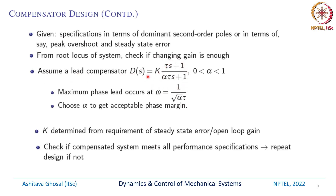In that case we can use a lead compensator. The lead compensator transfer function is k times (τs + 1) divided by (ατs + 1), where alpha is between 0 and 1. The maximum phase lead occurs when omega equals 1 over the square root of α·τ. We need to choose alpha to get the acceptable phase margin. K is determined from the requirement of steady state error or the open loop gain, and it needs to be checked if the compensated system meets all performance specifications. If it doesn't, we need to go back and repeat the design.